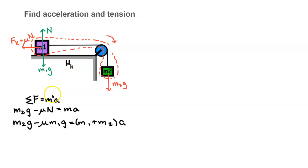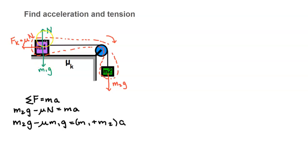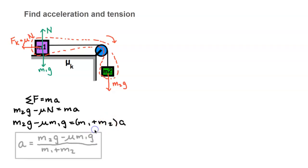We apply Newton's second law, looking only at external forces acting on our system — tension is internal so we don't need to worry about it here. We have m2g in the positive direction minus mu·n (friction in the negative direction) equal to ma. We substitute n with m1g, since those forces are balanced vertically. The m on the right-hand side is the total system mass, m1 plus m2. Dividing both sides by m1 plus m2 gives acceleration equals (m2g minus mu·m1g) divided by (m1 plus m2).